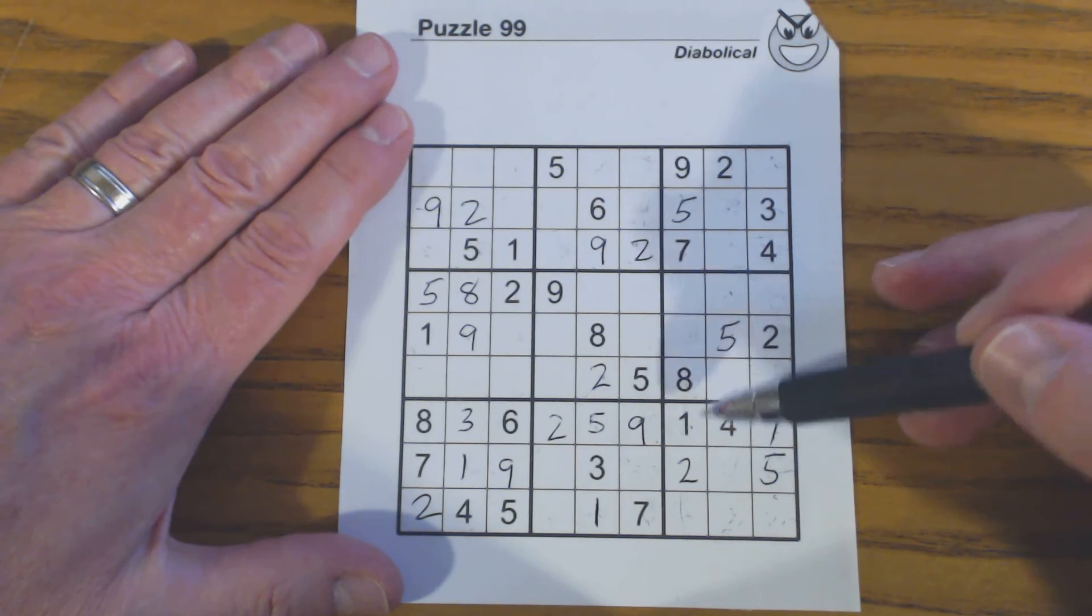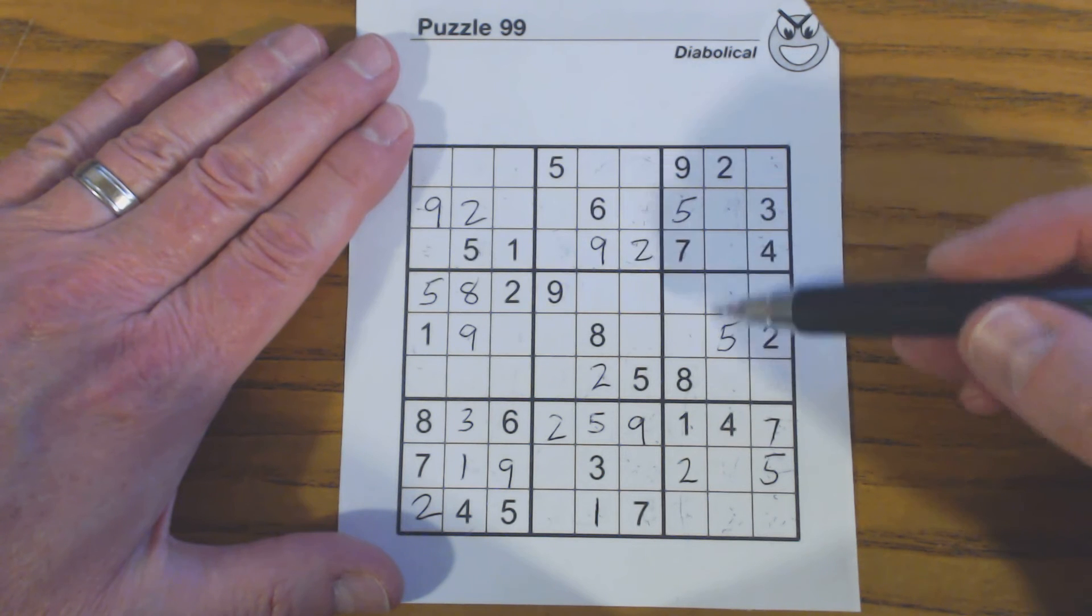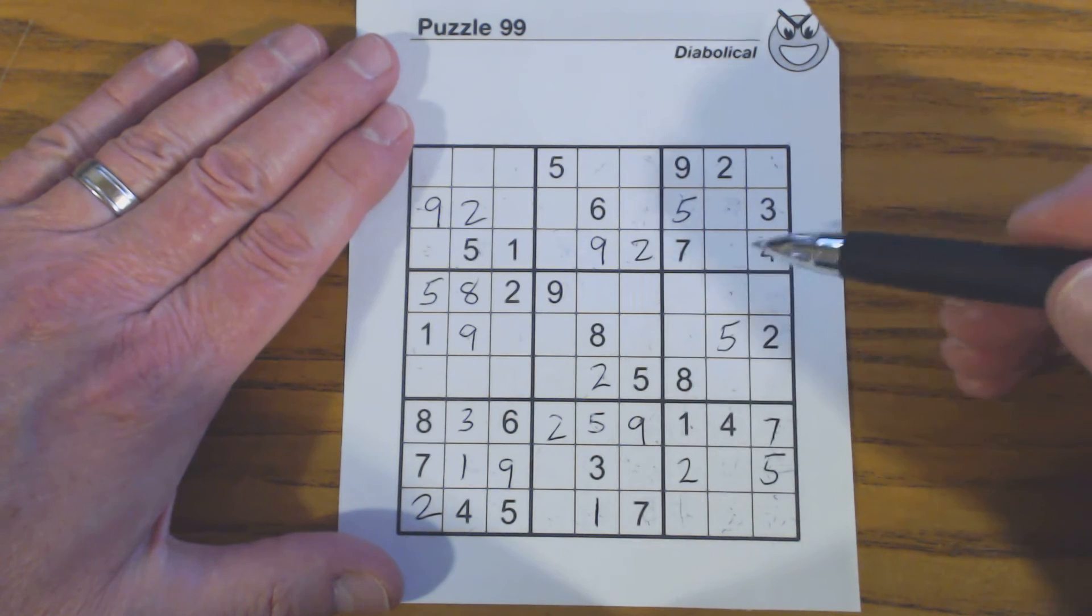we know that these two cells have to be 6 or 8, so we can eliminate them and we can also eliminate the 6 and the 8 from this column. So what's left now?